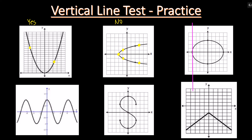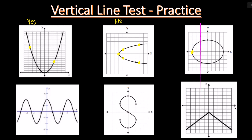Let's check the third graph. At the very left side, it has one intersection, but after moving, there are two intersections. So it's not a function.